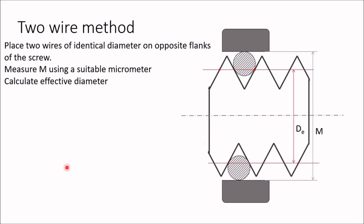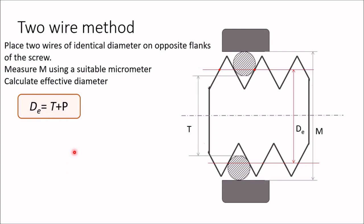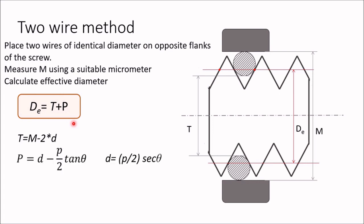Now how do we calculate the effective diameter? Using this relation: effective diameter is equal to T plus P, where T is the distance under the wire. T can be obtained as M minus 2D, where D is the diameter of the two wires. P is the correction factor — it represents the sum of the two distances from the wire contact point to the pitch line on each side, and these two distances are equal, so P represents their sum.